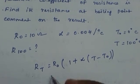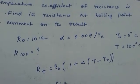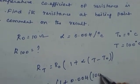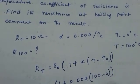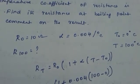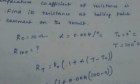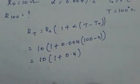It is R0. What is the value of R0? 10 into 1 plus 0.004 into 100 minus 0. What is that? 10 into 1 plus here it is 0.004 into 100 that is 0.4. It is nothing but 0.4.